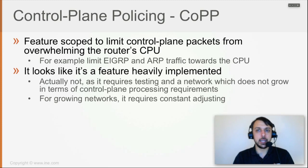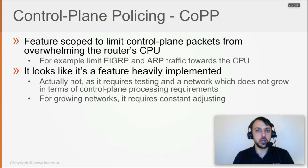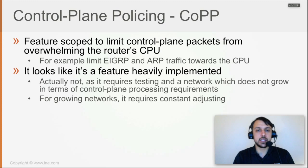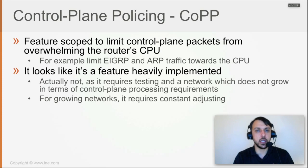Implementing CoPP correctly requires a lot of testing, and it requires deployment in a network whose size — from the control plane point of view, in terms of number of devices and number of routes — doesn't grow or doesn't grow significantly over time. If the whole network of EIGRP routers goes down and you have 10 routers, when the network comes back up it might be around 20 packets per second of EIGRP. But if the network grows from 15 routers to 50 routers, there will be much more EIGRP traffic per second in the same scenario. In a constantly changing and growing network, this feature is not likely to be implemented because the configuration has to be constantly retested and readjusted.